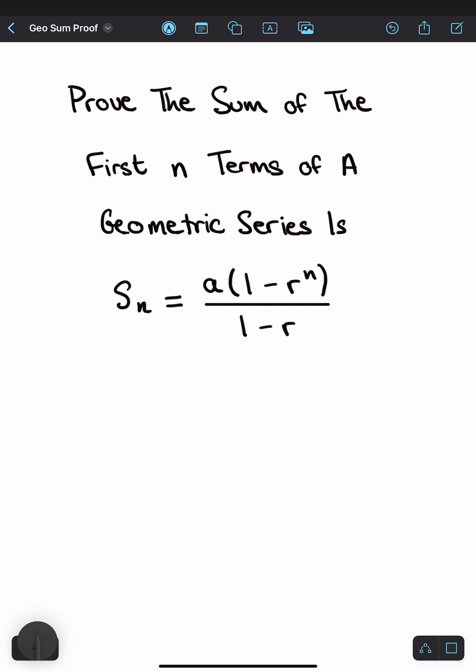The way I remember how to start this proof is first by multiplying both sides by 1 minus r. So that means I get S_n times 1 minus r equals a times 1 minus r to the n. This becomes S_n minus rS_n. So this is telling me what I need to do for my proof.